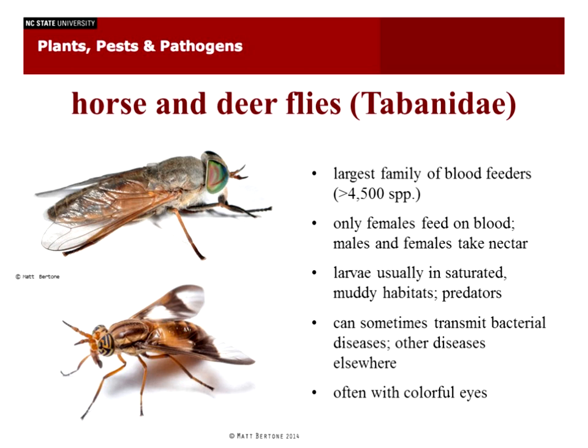Horse and deer flies — the Tabanidae — are some of the largest of our blood feeders and also the largest family of blood feeders, with over 4,500 species — over 1,000 more species than mosquitoes. Again, only females feed on blood; males and females both take nectar. The larvae are usually in saturated muddy habitats and are predators — they hunt for prey on the banks of ponds and streams. They have a venomous bite, are very large maggots often well over an inch long, and have even been reported to feed on frogs and small amphibians.